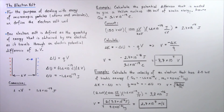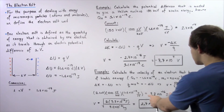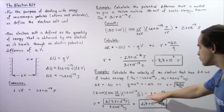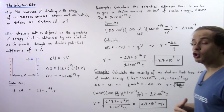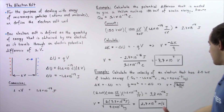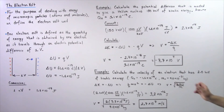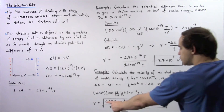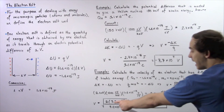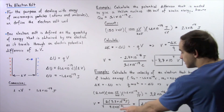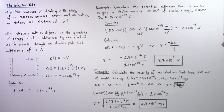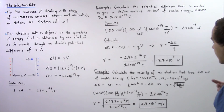To find the velocity, we plug this value into the equation. Since the electron loses potential energy, the negative signs cancel. So velocity equals the square root of 2 times positive 3.2 times 10 to the negative 16 joules divided by the mass of the electron, giving a velocity of approximately 2.7 times 10 to the 7 meters per second.